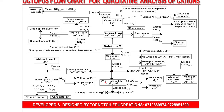Second possibility: white precipitate insoluble in excess. If you get a white precipitate insoluble in excess, it is either magnesium or calcium ion. Remember, barium can also be placed here — so we can have magnesium, calcium, and barium. But magnesium and calcium are enough to give you full credit.